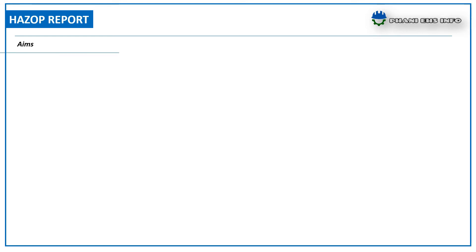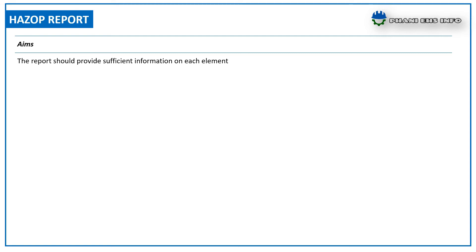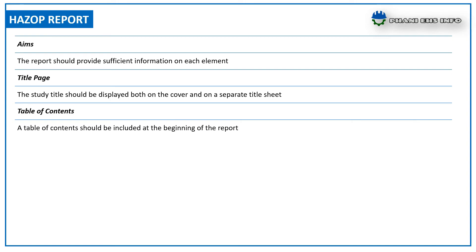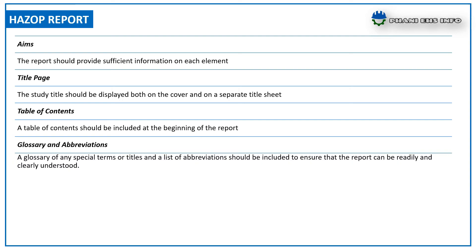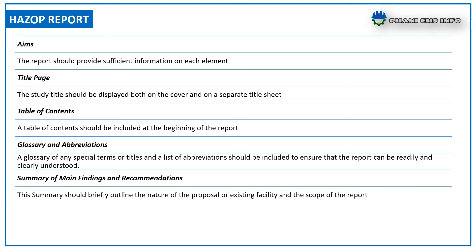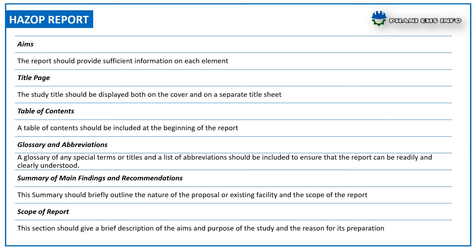The HAZOP report may include different sections. The aim section should provide sufficient information on each element. A title page displays the study title on the cover and a separate title sheet. A table of contents should be included at the beginning. A glossary of special terms and list of abbreviations should be included to ensure the report can be clearly understood. A summary of the main findings and recommendations should briefly outline the nature of the proposal or existing facility and scope of the report. The scope section gives a brief description of the aims, purpose, and reasons for the study's preparation.